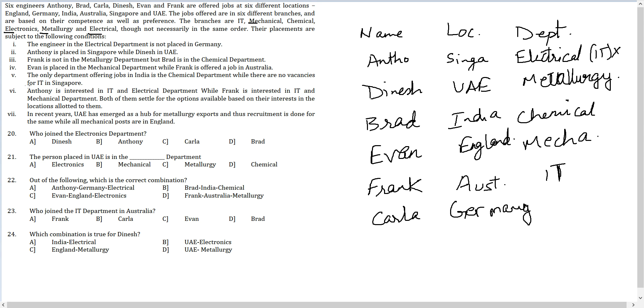And what is she doing? IT is done. Mechanical is done. Chemical is done. Electronics is not done. So Carla is doing Electronics. Now I have all the names, all the locations, all the departments. Simply marking the answer is required now.